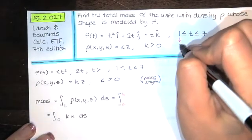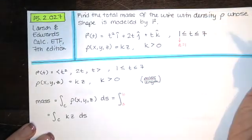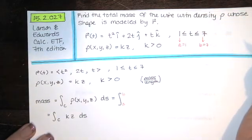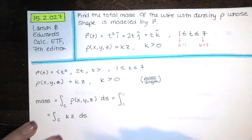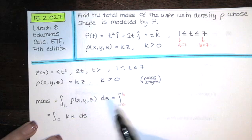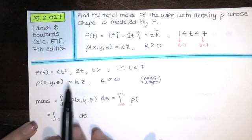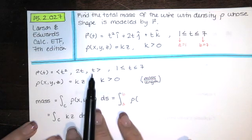So in our case, A is equal to 1 and B is equal to 7 because we start at T equals 1 and we end at T equals 7. And then we'll take this density function, which is a function of X, Y, and Z, and we'll write that in terms of T.